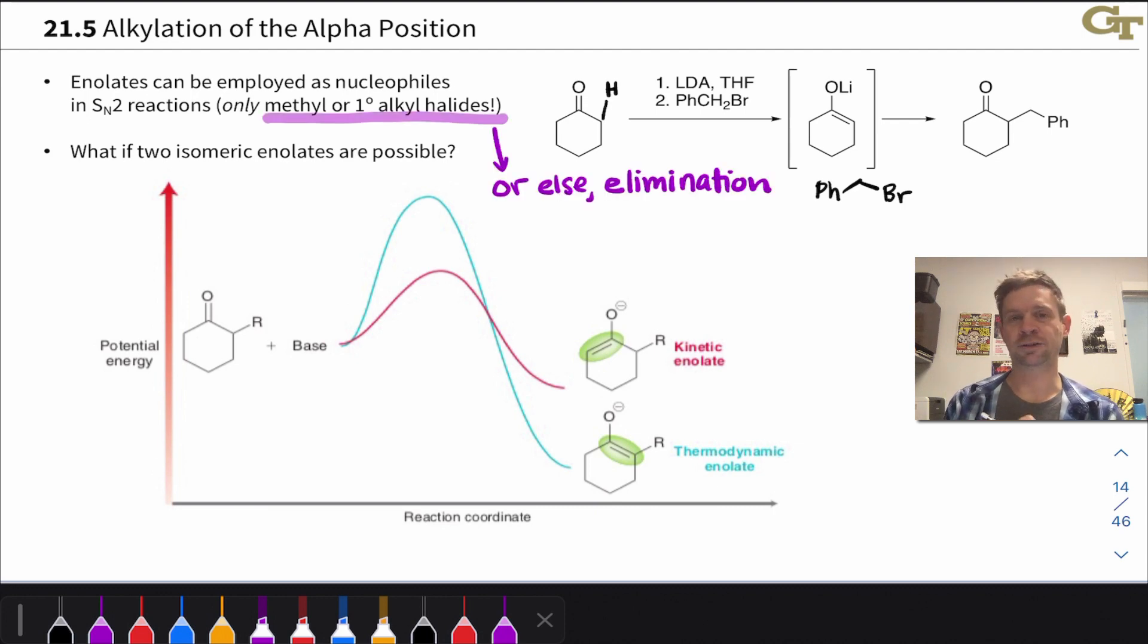However, only methyl or primary alkyl halides will work in this reaction. Secondary and tertiary alkyl halides will undergo elimination in the presence of enolates. They're just too Bronsted basic. They'll rip a proton right off, kick off the leaving group, and you've got yourself a carbon-carbon double bond. So watch out for elimination here with secondary and tertiary alkyl halides.